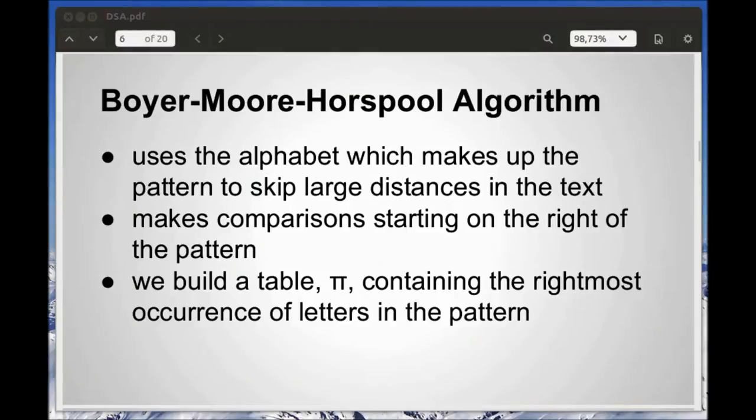The Boyer-Moore-Horsepool is the algorithm we will be examining in detail now. It builds on the weaknesses of the Knuth-Morris-Pratt and Naive methods and provides a solution more applicable to the general situation. The Knuth-Morris-Pratt relies mostly on the idea of repetition through the pattern, but in natural language this is less likely to happen.